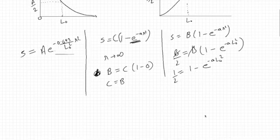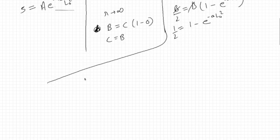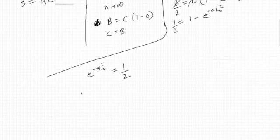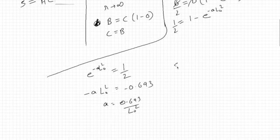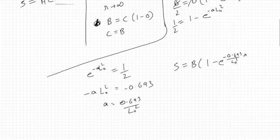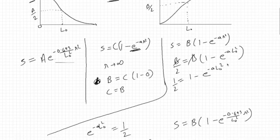Solving: e^(-a l₀²) = 1/2, which is the same form as before. Taking the log, -a l₀² = log(1/2) = -0.693, so a = 0.693 / l₀². The value of a is the same as before. The final function is: s = B · (1 - e^(-(0.693 / l₀²) · r²)).